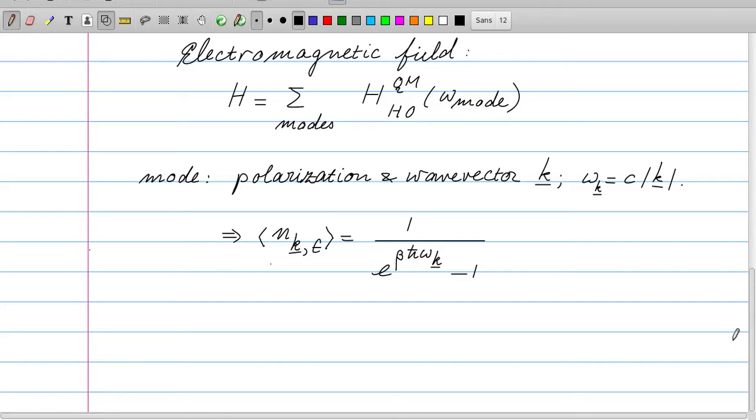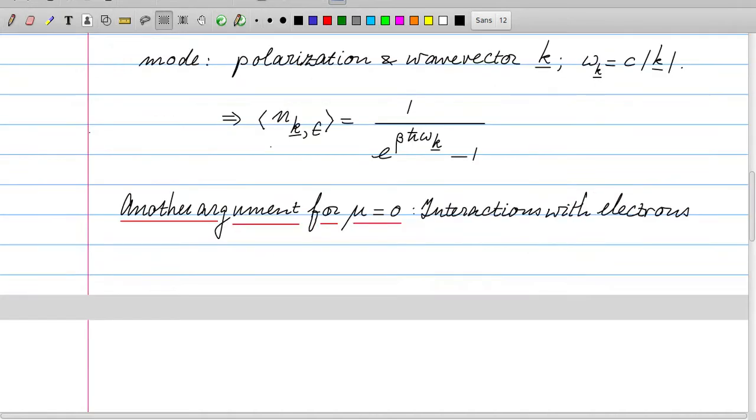But wait a minute. We have, of course, assumed there are only photons in the system. And in reality, these photons will always interact, for example, with excitations in the walls of the container. And there is an additional problem, even if we don't have any walls. If we have vacuum, we are facing vacuum fluctuations. It is interesting to consider other arguments for the chemical potential of the photons being zero.